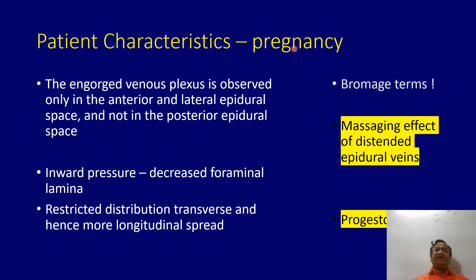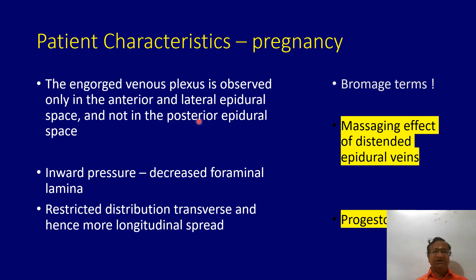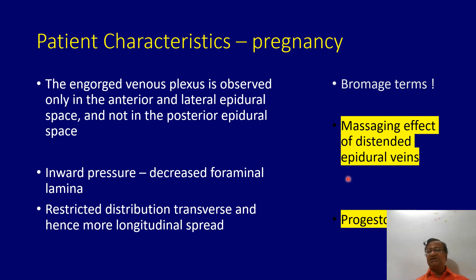Patient characteristics — pregnancy: the engorged venous plexus is observed in the anterior and lateral epidural space, not much in the posterior epidural space where we inject. There is inward pressure and decreased foraminal length, resulting in restricted transverse distribution but more longitudinal spread. Brahmach described this as the massaging effect of the distended epidural veins, back in the 1960s.